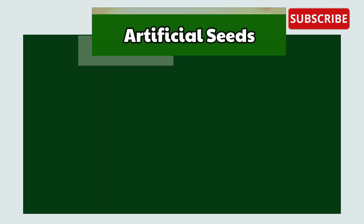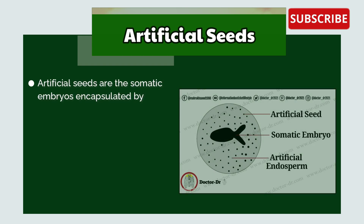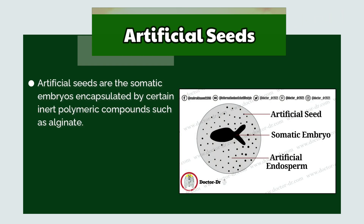Artificial seeds are somatic embryos encapsulated by certain polymeric compounds such as alginate. They are very useful in the mass propagation of agricultural and hybrid varieties.